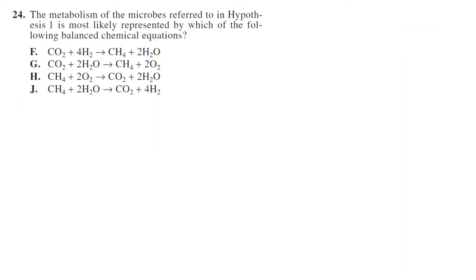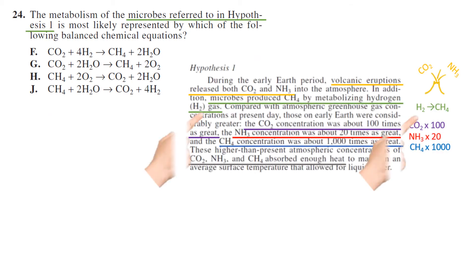Metabolism of the microbes referred to in hypothesis one, that's right there. Okay, most likely represented by which of the equations? So microbes produced CH4, so CH4 is produced by metabolizing hydrogen, so CH4 produced metabolizing hydrogen, choice F. You don't even need a deep understanding of chemical equations to know that one thing leads to the other.